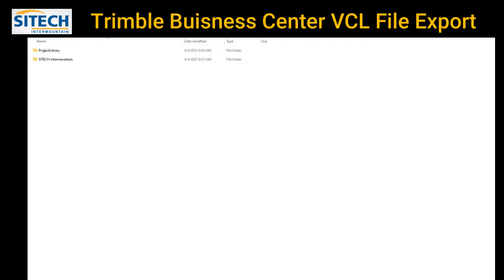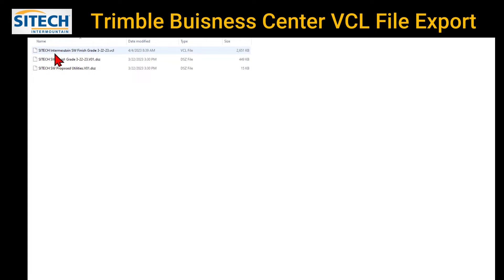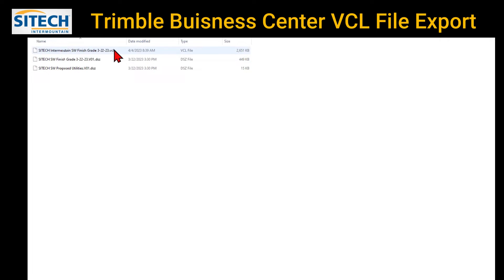As soon as that's exported, we can go to the project library, look at it - go to projects, office data, go to designs. I've got the other ones in there that I had already created - proposed utilities and a Southwest finish grade as separate DSZ designs. But now I've got all that compacted together as the SiteTech Intermountain Southwest finish grade 3-22 VCL file. We'll go ahead and take it out to the machines and show you what it looks like and how you can deal with that data by turning on and off those layers out in the machine.